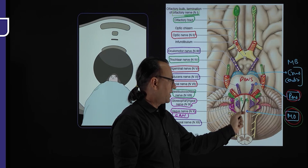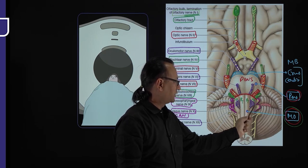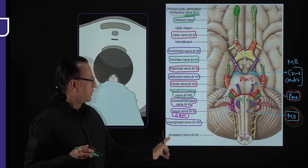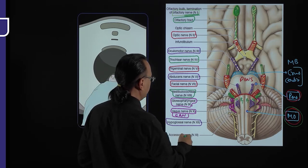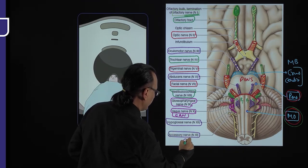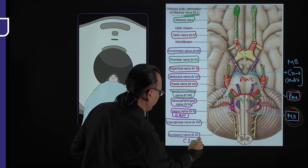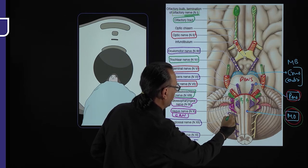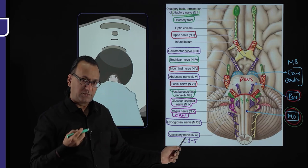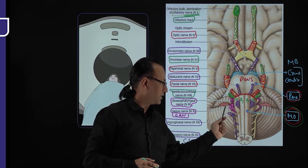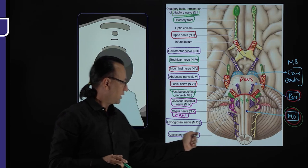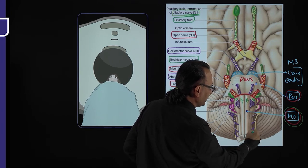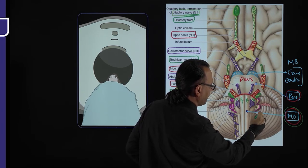The hypoglossal nerve axons arise between the pyramid anteriorly and the olive posteriorly, both located on the anterior aspect of the medulla oblongata. The spinal part of the accessory nerve arises from the spinal cord at cervical levels C1 to C5, then joins the cranial part of the accessory nerve. Both sides are shown here.